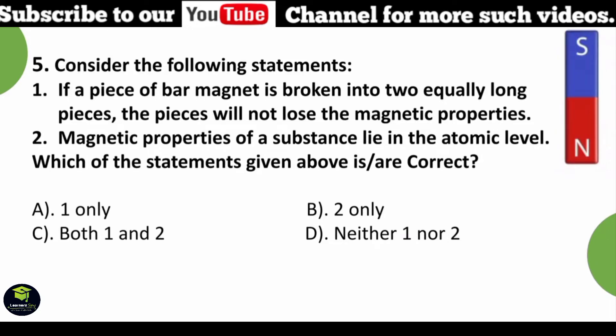Consider the following statements: First, if a piece of bar magnet is broken into two equally long pieces, the pieces will not lose their magnetic properties. Second, magnetic properties of a substance lie at the atomic level. Which of the statements given above is correct? Answer: Both one and two.